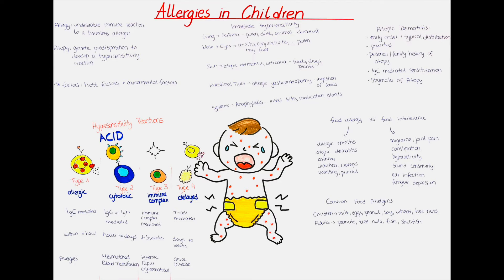This reaction usually occurs in one to three weeks. The fourth and last type is the delayed type. It occurs in days to weeks. It is mediated by T helper cells which are activated when an antigen presenting cell presents an antigen. The T helper cells then secrete cytokines which activate the macrophages and T cells and attract more macrophages to the site of reaction, which causes an inflammatory response and tissue damage. This type is seen in contact dermatitis, chronic transplant rejection, multiple sclerosis, Hashimoto's thyroiditis and celiac disease.